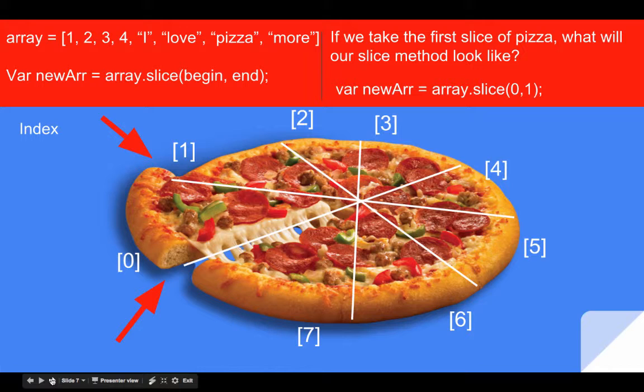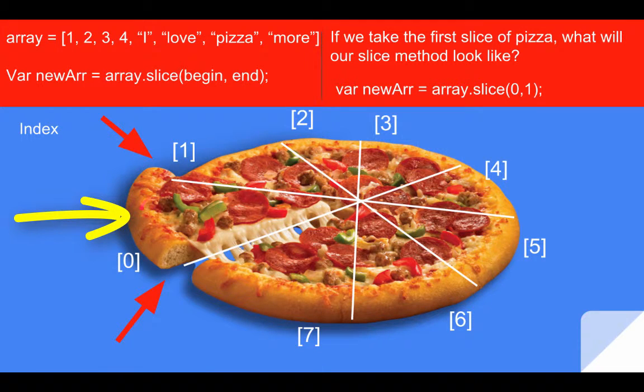So this can be confusing to some folks when they see this because we're not actually removing index zero and index one. We're only removing the slice at index zero. But to do that, of course, to remove this element, the element at index zero, which is the element one, we have to make a slice starting at zero and ending at one. So we start before index zero, we end before index one, and that gives us one element, not two.